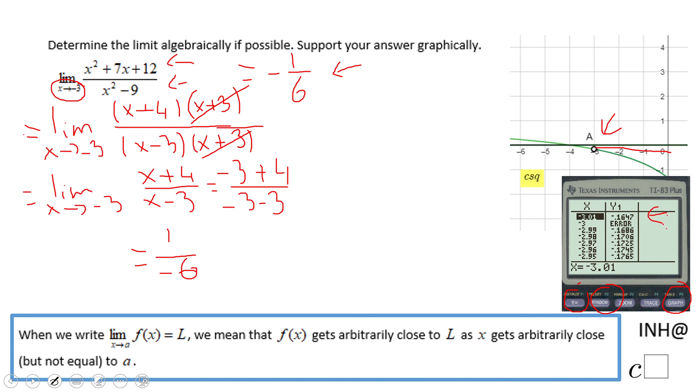Notice what's happening when x is getting closer and closer to negative 3. The y value gets closer and closer to negative 0.16, which is a good approximation of this negative 1 over 6.